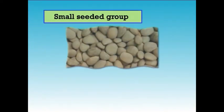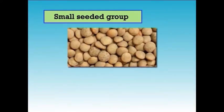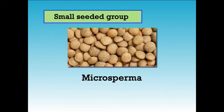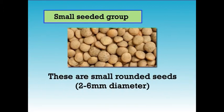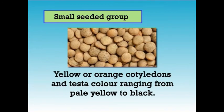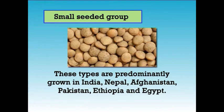The second group is the small seeded group, which includes subspecies microsperma. These are small rounded seeds of 2 to 6 mm diameter, with yellow or orange cotyledons and testa color ranging from pale yellow to black. These types are predominantly grown in India, Nepal, Afghanistan, Pakistan, Ethiopia and Egypt.